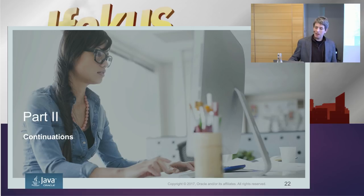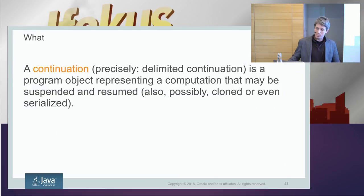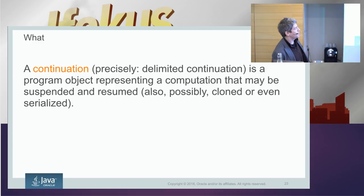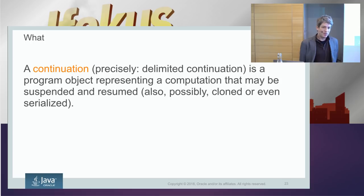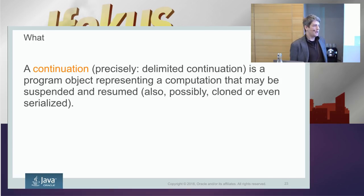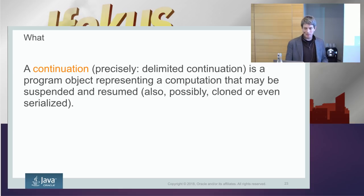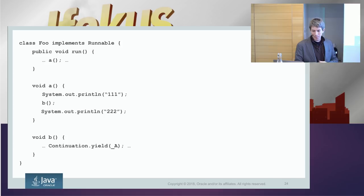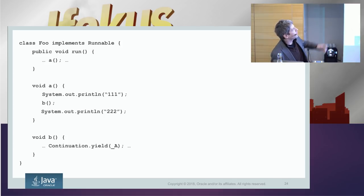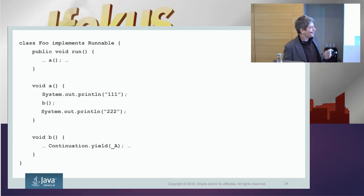We're going to add fibers and continuations. A continuation is a piece of sequential code — think of it as a Runnable — that can choose to suspend itself, and the next time you run it, instead of starting afresh, it continues from where it last stopped. Here we have some runnable that calls A, A does some printing, it calls B in the middle, and B says it wants to yield. A continuation context can be delimited by a scope — it's like an exception with a handler.